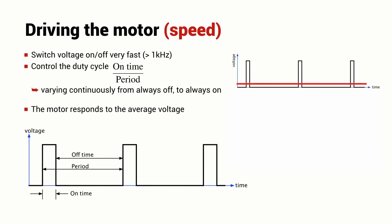The motor responds to the average voltage. So here's an example where the duty cycle is relatively low. That is the voltage is off for more time than it is on and the motor sees an effective average voltage shown by the red line.